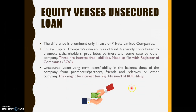Unsecured loans are long-term liabilities in the balance sheet of the company, from promoters, partners, friends, relatives, or other body corporates. A company can borrow funds from sources other than banks. They might be interest-bearing and there is no need to file with the ROC for this — no need to inform the Registrar of Companies regarding unsecured loans. That is the main advantage, which is why promoters always love unsecured loans, as I will discuss in the next slide.